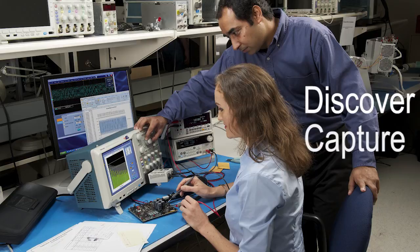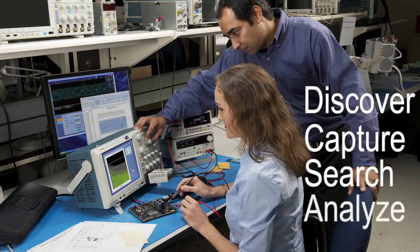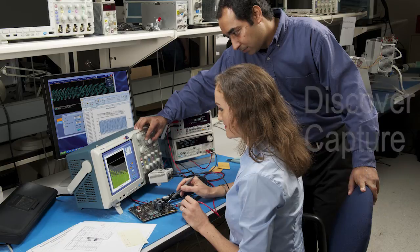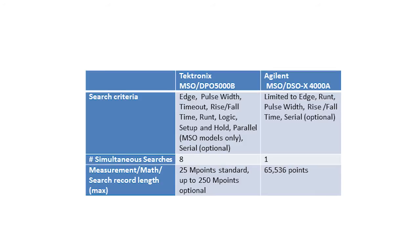The final step in the debug process is analyze. Looking at the specifications, you will notice that the Tektronix 5000 search, measurement, and math record length matches the record length specification of the oscilloscope. On the other hand, the Agilent X4000A series manual describes its smaller measurement record as 65,536 points maximum, a significant limitation on measurement resolution.